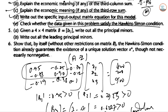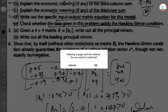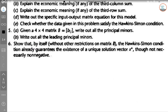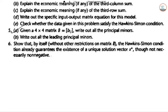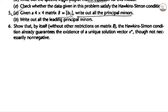Next is question number 5. Given a 4x4 matrix B of (I minus A) where the diagonal entries are 0.6, write down all the principal minors. The first-order principal minors are B11, B22, B33, and B44.